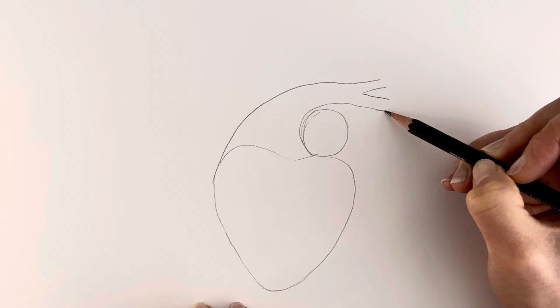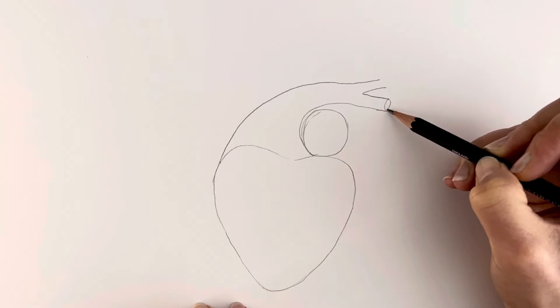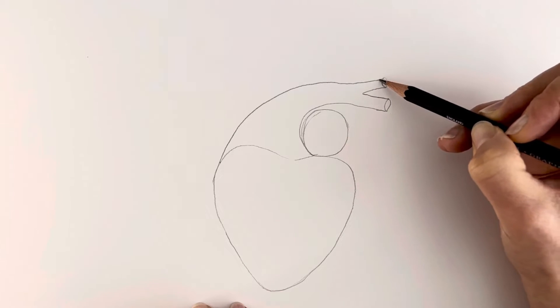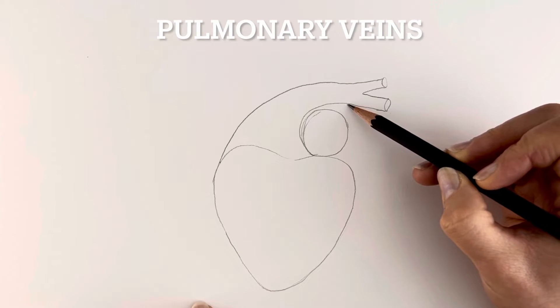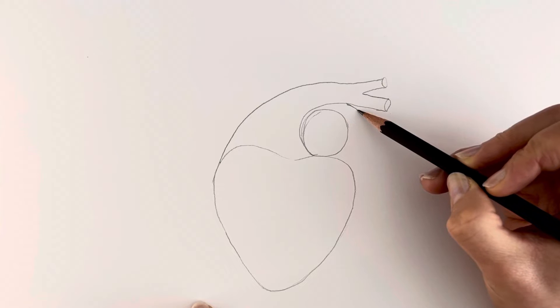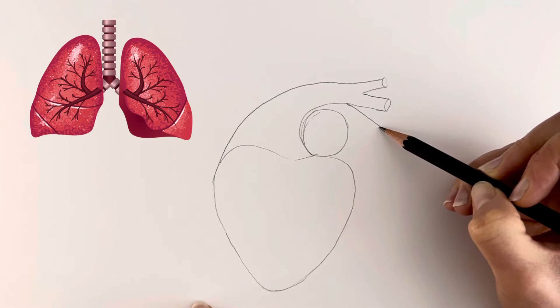We're going to draw it as if the tubes have been cut off, so I'm just going to draw like a little hole there and a little hole there. Next we're going to be drawing the pulmonary veins. They're the ones that bring back blood from the lungs.